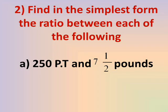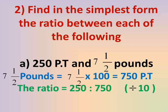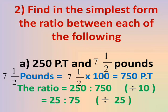Number 2: Find in the simplest form the ratio between each of the following. Number A: 250 piastres and 7 and a half pounds. We need to convert to the same unit. We convert from the larger unit to the smaller — from pounds to piastres. So 7 and a half pounds × 100 = 750 piastres. The ratio is now 250 to 750.